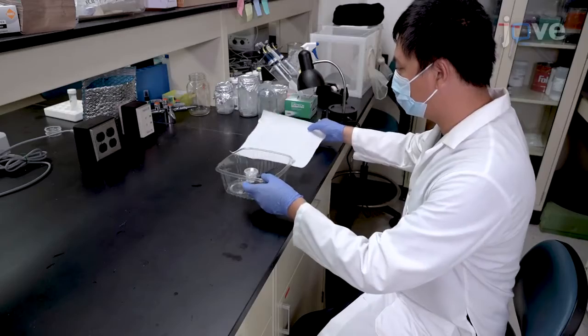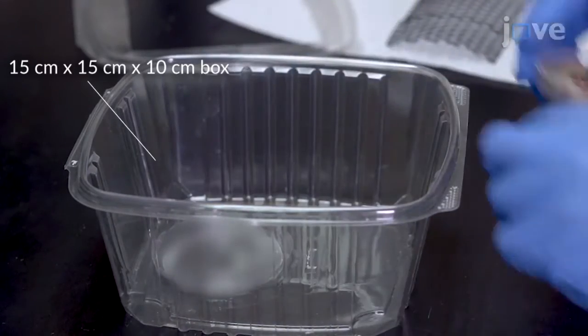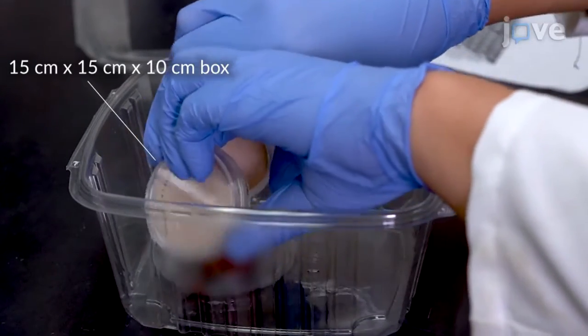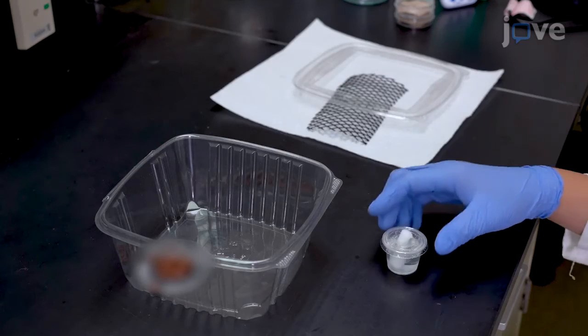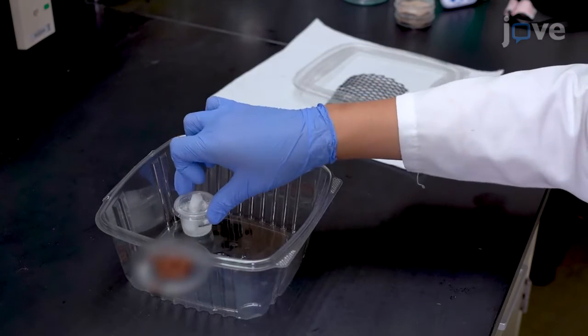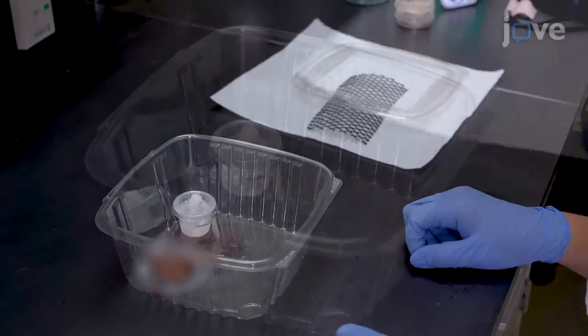Begin by placing 12 male pupae and 12 female pupae in a box. Place a 10% sucrose solution in the box for feeding adults. Cover the box with a paper towel.